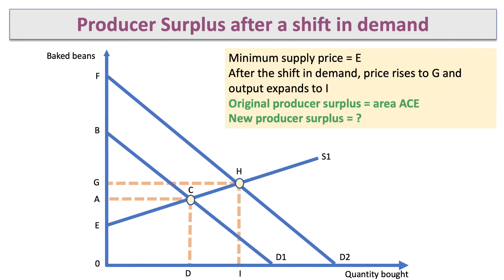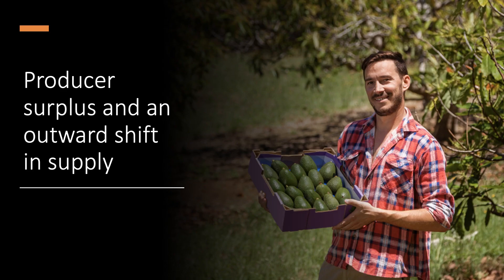The original producer surplus was area ACE. Can you find the new producer surplus for this firm? The answer is area GHE — a bigger area, because they're getting a better price for their product and the area above the supply curve is greater. Their total revenue would be OGHI, of which producer surplus is GHE.